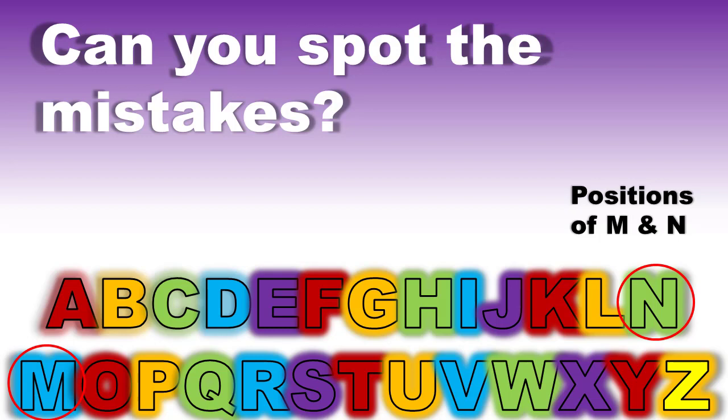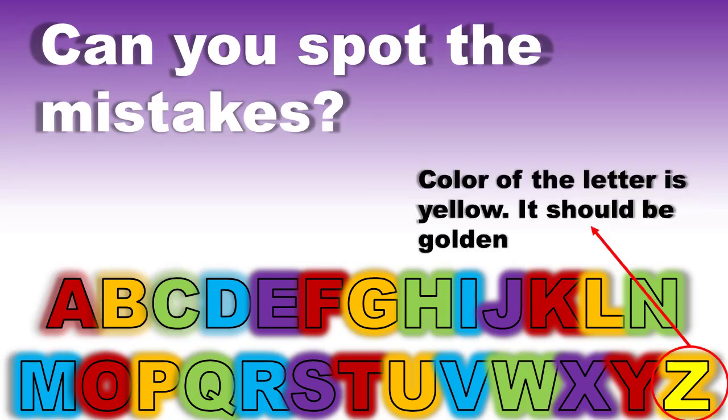But wait, take some more time to find the other mistakes. Well done! Color of the letter Z is yellow. Its color should be golden as used for some other letters in the pattern. I hope you are not exhausted.